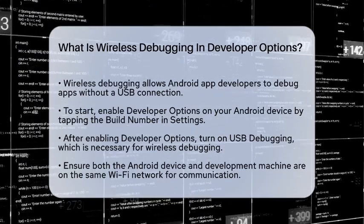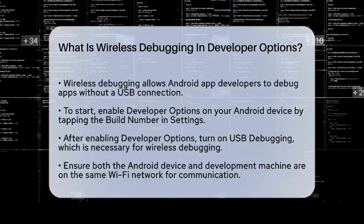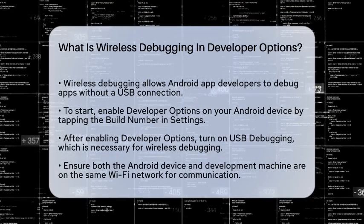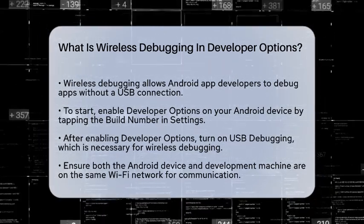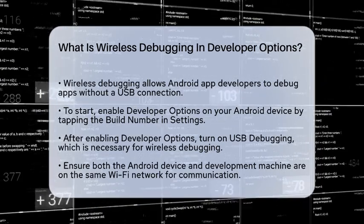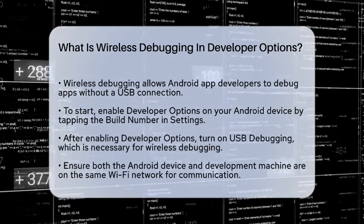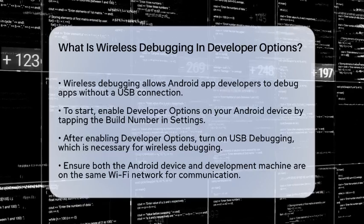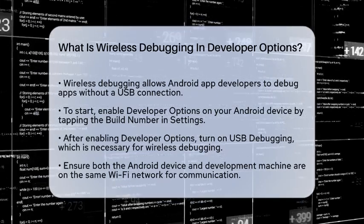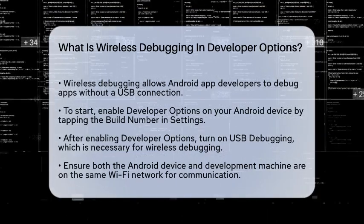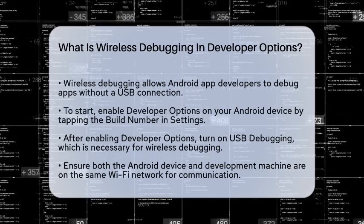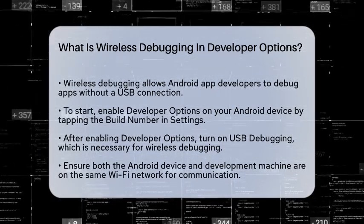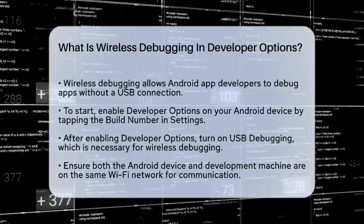Wireless debugging is a feature that allows you to debug your Android apps without the need for a physical USB connection. To get started, you first need to enable developer options on your Android device. This step can vary slightly depending on the device you're using, but generally you go to Settings, then About Phone, and tap the build number several times until you see the developer options menu appear.